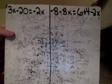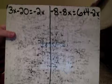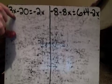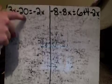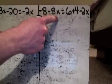All right, now would be as good a time as any here to try these two on your own. I've got 3x minus 20 equals negative 2x. Over here my other problem is negative 8 minus 8x equals 6 plus 4 minus 2x.